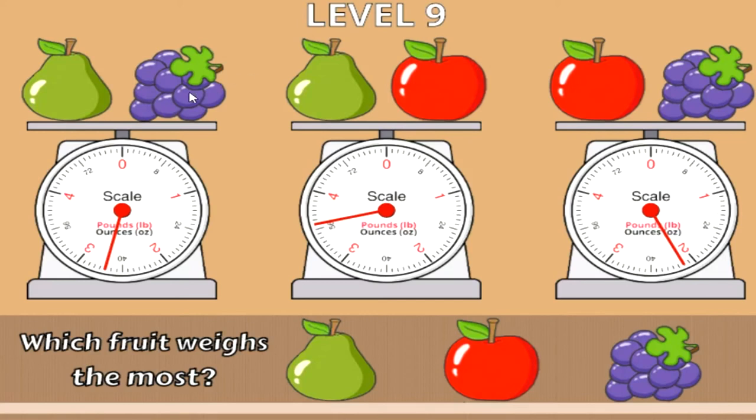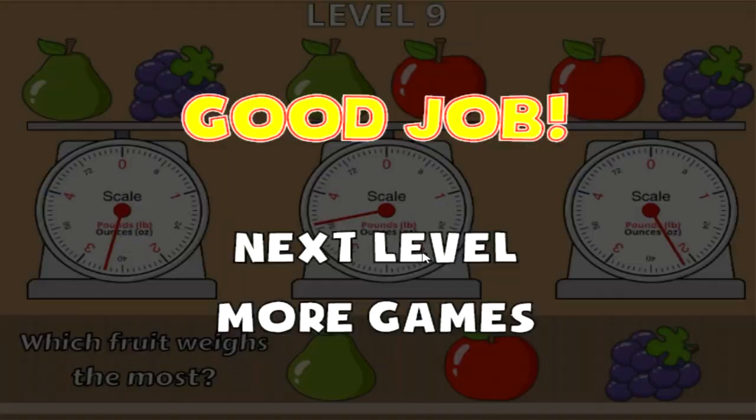Now the real question is how does the pear relate to the apple, is it greater than or less than weight-wise. The way we'd figure that out, if we look at the first and third scale, you notice they both have grapes on them but one has apple and one has a pear. By looking at these two scales we'll figure out if the apple or the pear weighs the most. We look at this scale and it's a little over two pounds, and the one with the grapes and the pear weighs more than two and a half pounds. So we know that the pear weighs more than the apple, and we know that the apple weighs more than grapes, so we can safely choose the pear.